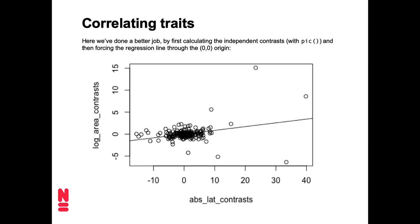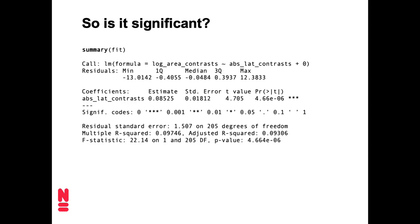A negative contrast basically means a shrinking of an area and a decrease in latitude compared to the ancestor. When we do the regression and force it through the origin, it looks like there is a positive correlation. To test whether this is actually significant, we run a linear model — just a regression forced through the origin. Looking at the p-value next to the three stars, this is highly, highly significant. It turns out there is indeed a positive correlation between range size and distance from the equator.